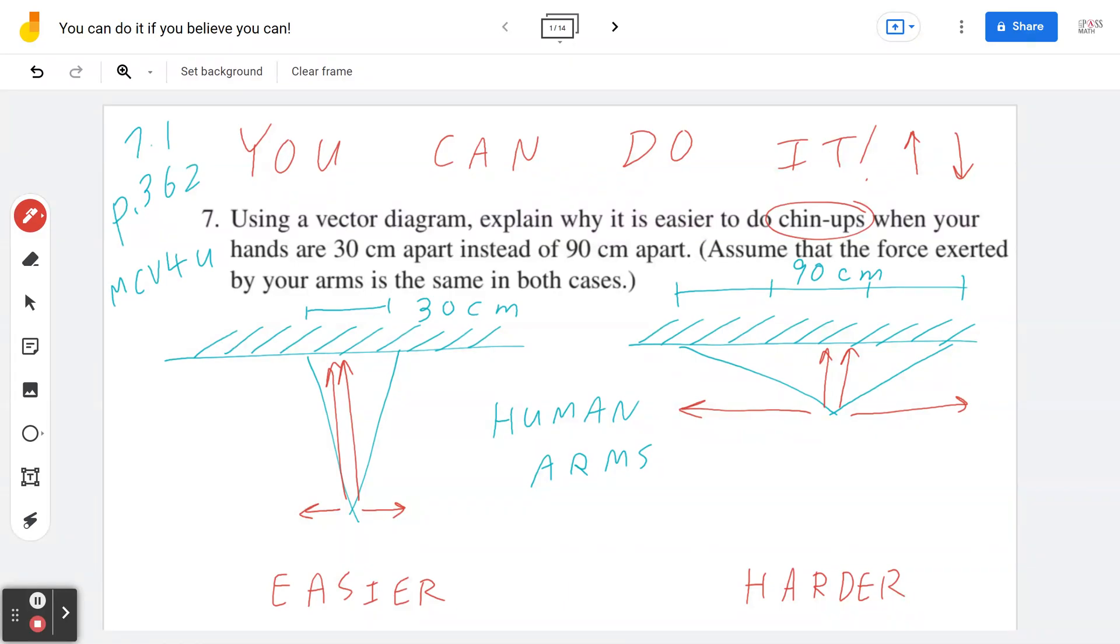And the reason is because of this horizontal component. So remember, when you do a pull-up, you're pulling it vertically and you also have to overcome the horizontal part. So the reason why in general 90 centimeters is more challenging or more difficult, because even if you hold the arms at 90 centimeters wide, you have to overcome a lot more horizontal component.